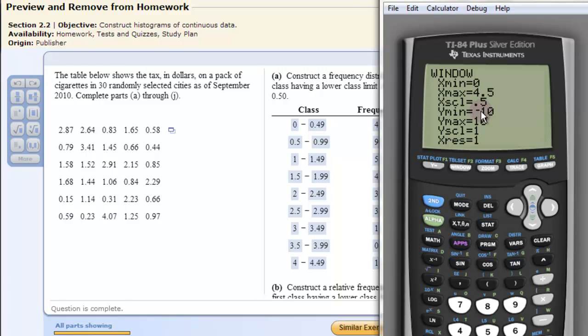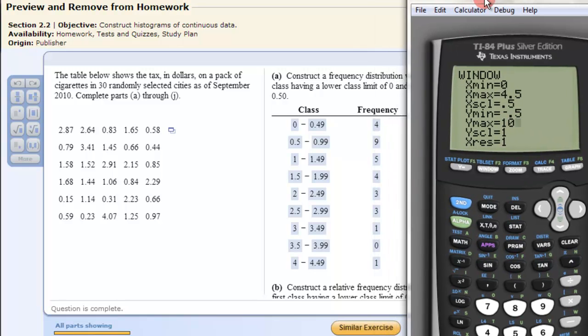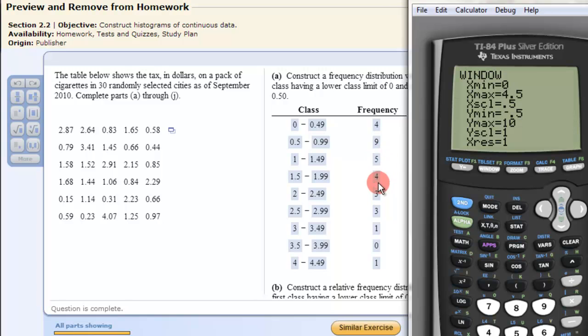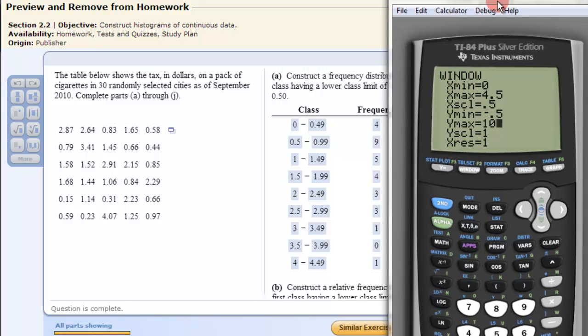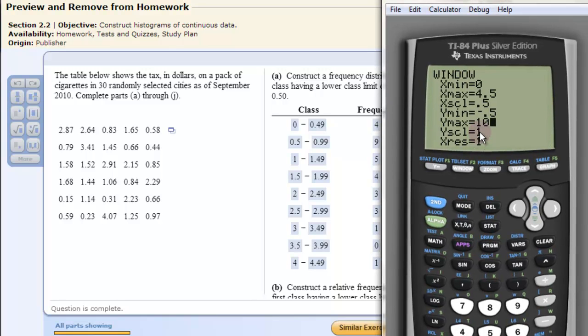The Y minimum value. We'll just say negative half. You can do something very small or even zero. I just do that so you can put it up a little bit. Y maximum. We'll put 10. And now the reason why I'm putting 10 is because if we look at the frequencies, you don't see anything over 10. 9 is the highest. So I want to do just something right over that. Then we leave the scale 1 because going up by 1 is fine. And this X res is always 1. Alright.